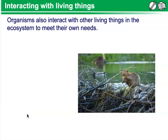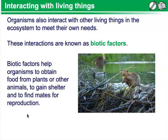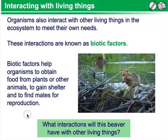Interacting with living things. Organisms also interact with other living things. These interactions are known as biotic factors. Biotic factors help organisms to obtain food from plants or other animals, to gain shelter, and to find mates for reproduction. So what interactions will this beaver have with other living things? The beaver uses trees to build a shelter, it eats trees and plants, and it will need a mate for reproduction.